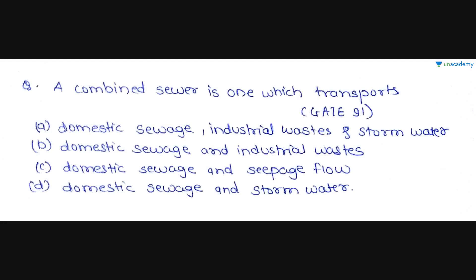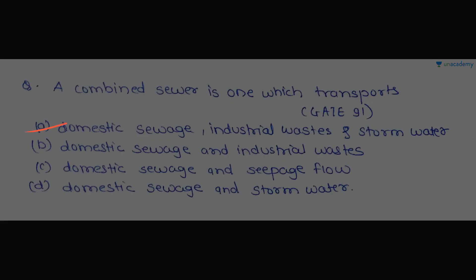Next question: a combined sewer is one which transports? This question was asked in GATE 1991. Option A is domestic sewage, industrial wastes, and stormwater. Option B is domestic sewage and industrial wastes. Option C is domestic sewage and seepage flow. Option D is domestic sewage and stormwater. A combined sewer transports domestic sewage, industrial waste, and stormwater — so option A is the correct answer.